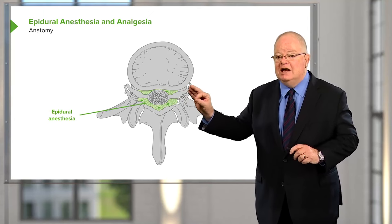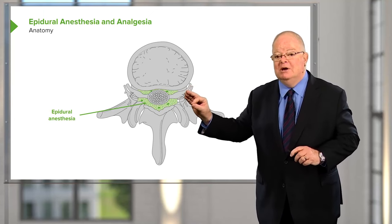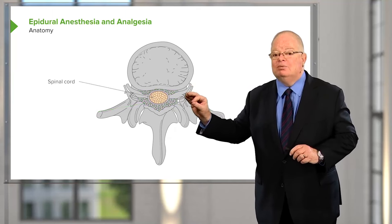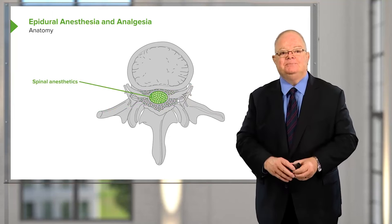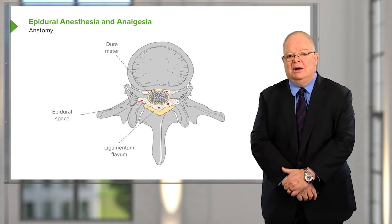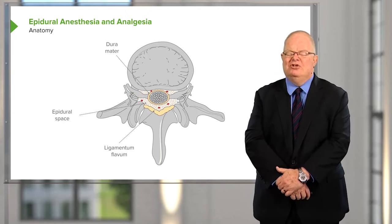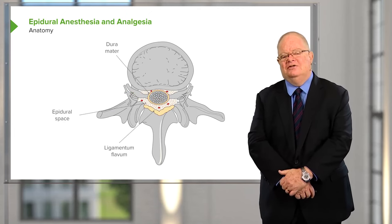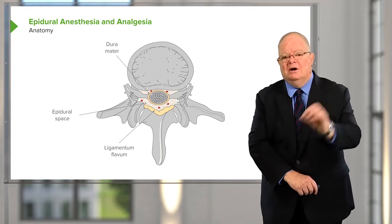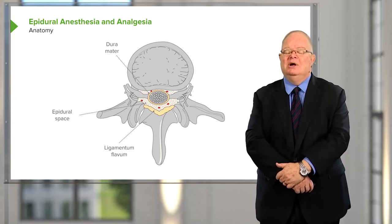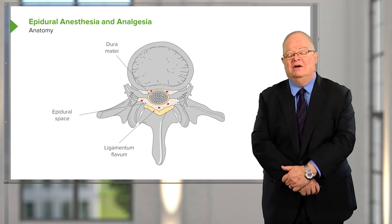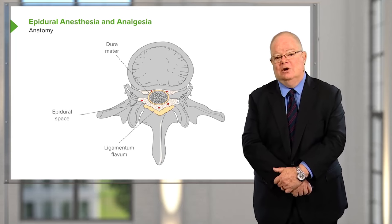If we pass the needle just a tiny bit further — two or three millimeters at most — we actually enter the spinal cord space, which is what we do when performing spinal anesthetics. The catheter is inserted between the ligamentum flavum and the dura of the spinal cord, which is really a potential space filled with fat and blood vessels. We inject local anesthetics, usually quite dilute, into this space, which can produce good analgesia to the lower half of the body.